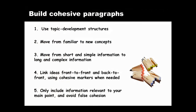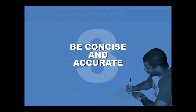Once you've written clear sentences and cohesive paragraphs, take time to review your work. Proofread to make sure you've been concise — so that every word counts — and accurate, so that sentences contain correct punctuation, spelling, referencing, and grammar. We'll start by looking at some sentences that aren't concise. As you read each one, think about how to trim words and tighten expression. Pause the video if you need to.